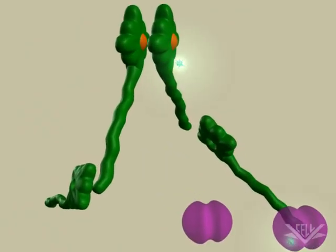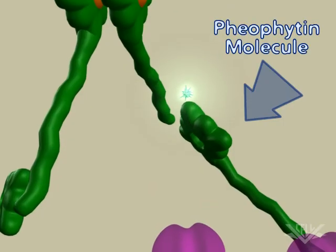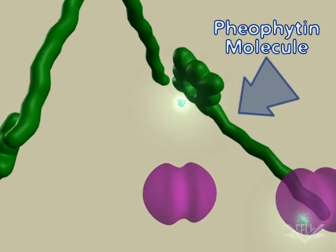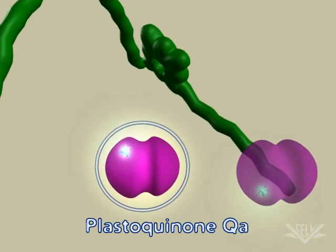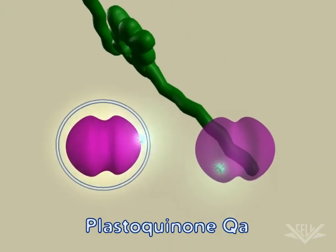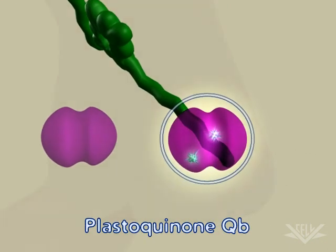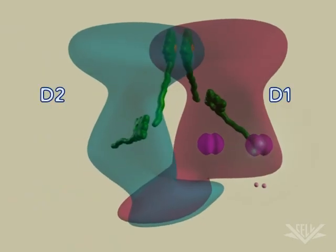In Photosystem II, the electron is then passed to a pheophyton molecule. The electron is then passed to plastoquinone QA and then to plastoquinone QB. These plastoquinone molecules are embedded in the D2 and D1 proteins.